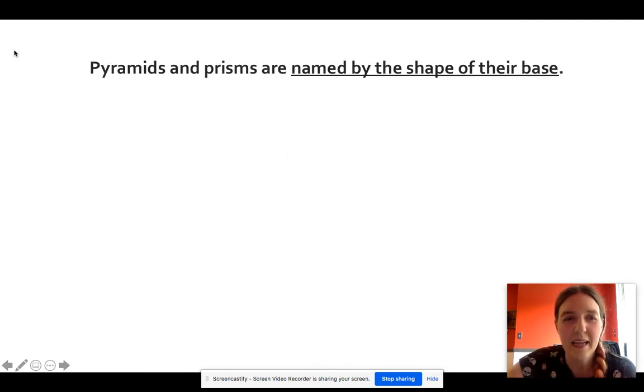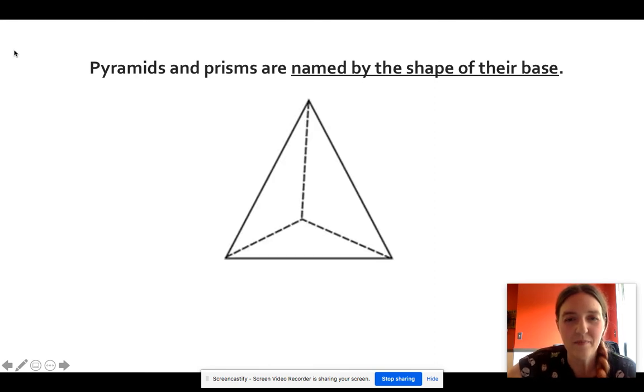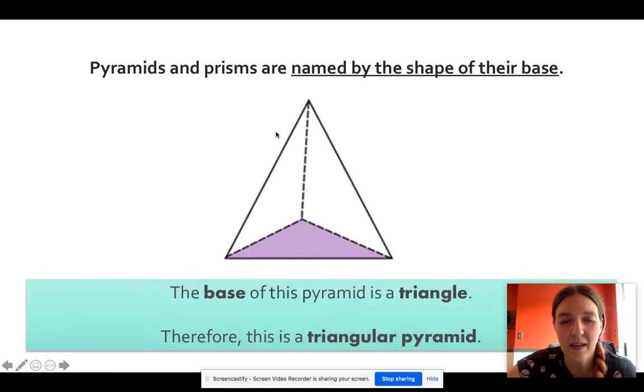We can name pyramids and prisms based on the shape of their base. So once you've decided whether you're looking at a pyramid with that pointy top, or whether you're looking at a prism with that flat top, then you can name it. And here are some examples. So here we have a pyramid because it's got that point at the top and we can look at its base. So this has a base of a triangle. It's sitting on a triangle, coming up to a point at the top.